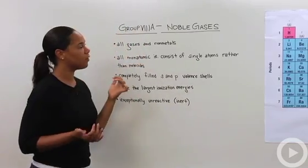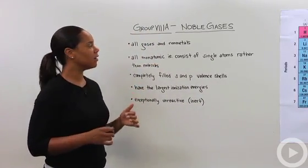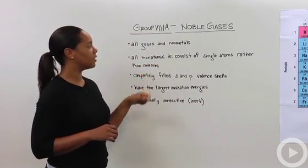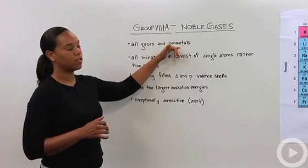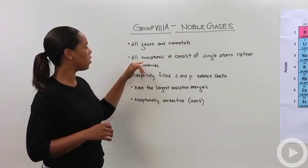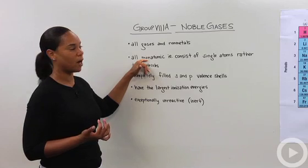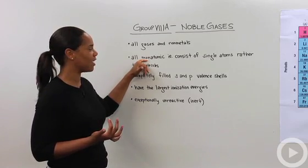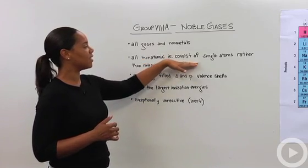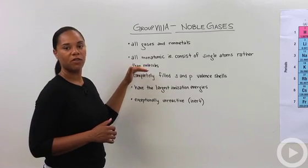And so what are the noble gases and why do we call them that? So all the elements that exist in that family are all gases and they're all non-metals. And so they all exist as monatomic elements, and so that means they consist of single atoms rather than molecules.